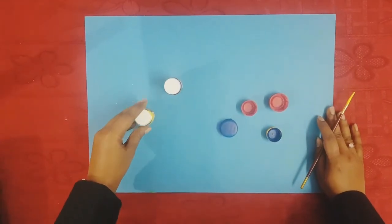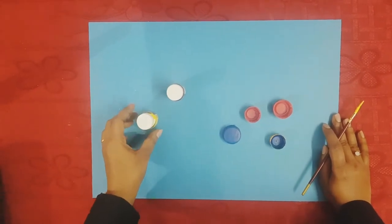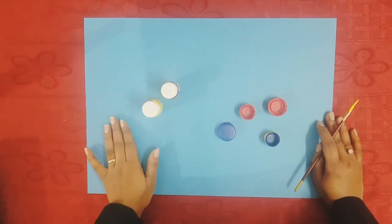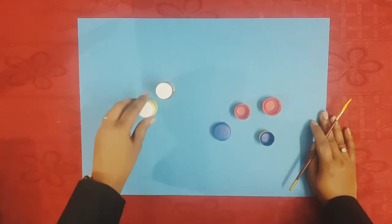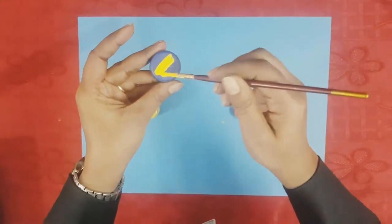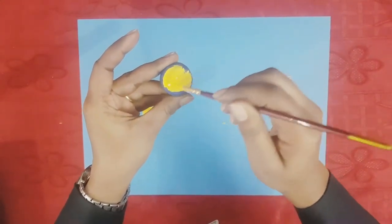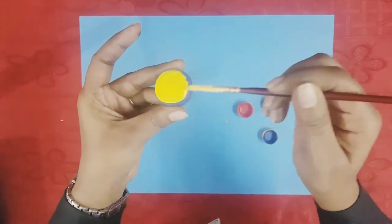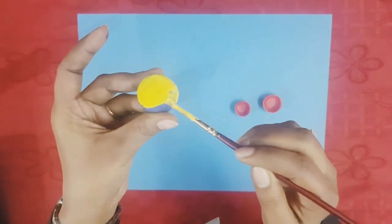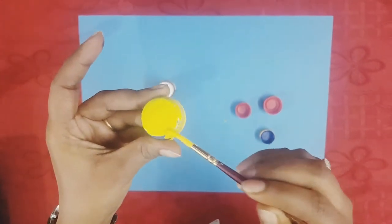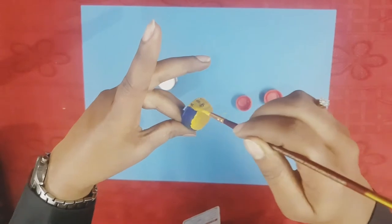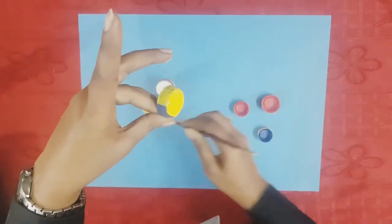Now, next, we will color the bottle caps with the poster colors. I am using yellow and red color to color the bottle caps. You can use any other color also. With the help of the paintbrush, you are going to color the bottle caps.